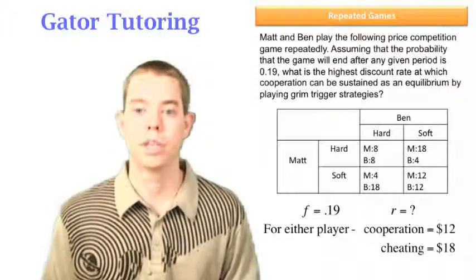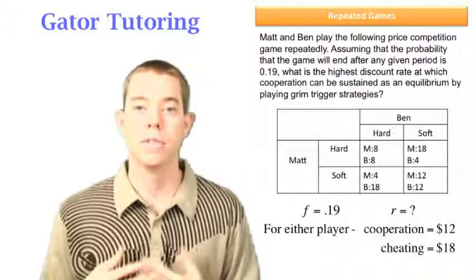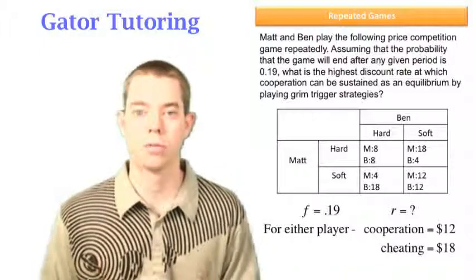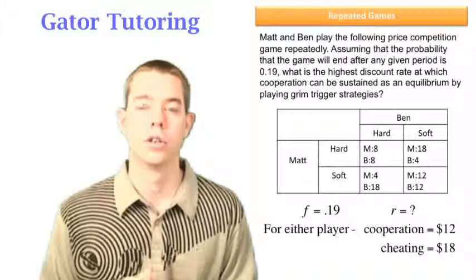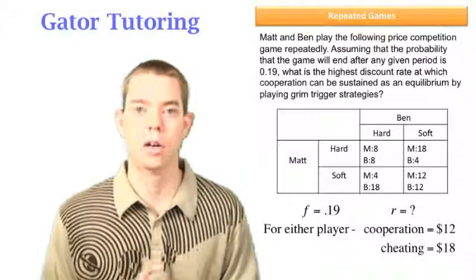We know that cheating is 18 because cheating is defined as I've convinced you to play soft, we're supposed to be cooperating, and I'm going to play hard instead, I'm going to cheat. So when you play soft and I play hard, I get 18.